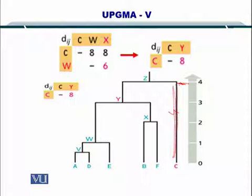So 4 here and 4 here. So Z, the new cluster, will be created.